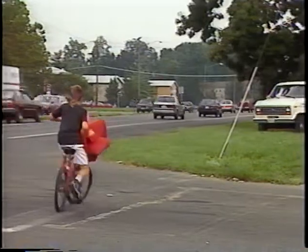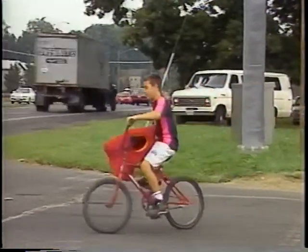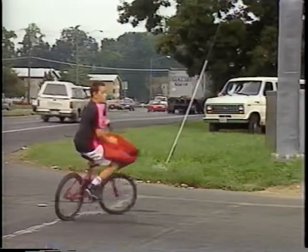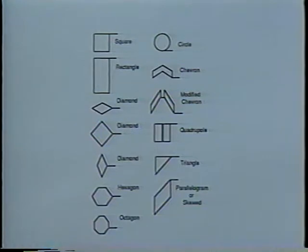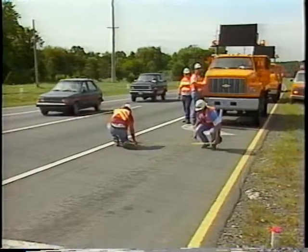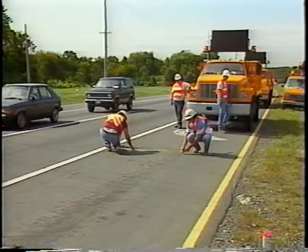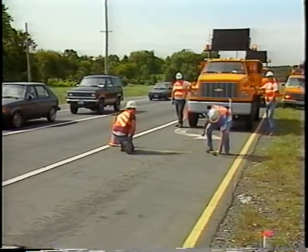Due to the necessity of detecting all forms of vehicles, from bicycles to high-bed trucks, manufacturers have developed quite a number of short loop designs. Several shapes are in common use, while others are only appropriate for detecting a particular range of vehicles in certain locations. Several states, such as California, specify loop shapes that are acceptable in their jurisdiction. When choosing a configuration, consider the loop shape that will allow maximum detection with the least chance of splashover into adjacent lanes.